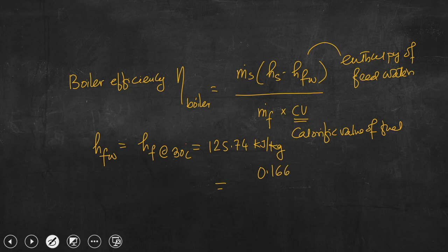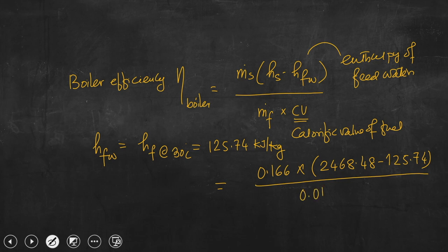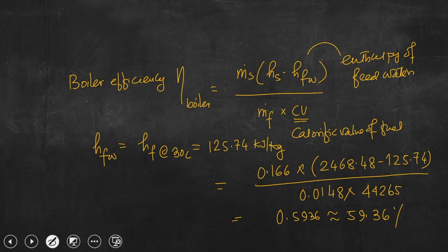Substituting all values: 0.166 times (2468.48 minus 125.74), divided by 0.0148 times 44,265. Calculating this gives efficiency equal to 0.5936, that is 59.36 percent. This is the efficiency of the boiler. The efficiency is not even more than 60 percent, as seen from this lab scale experimental data.